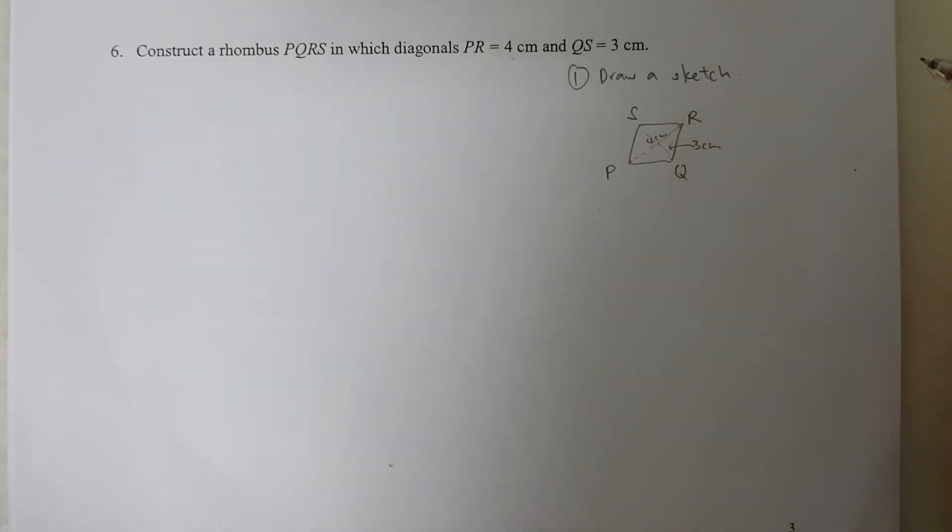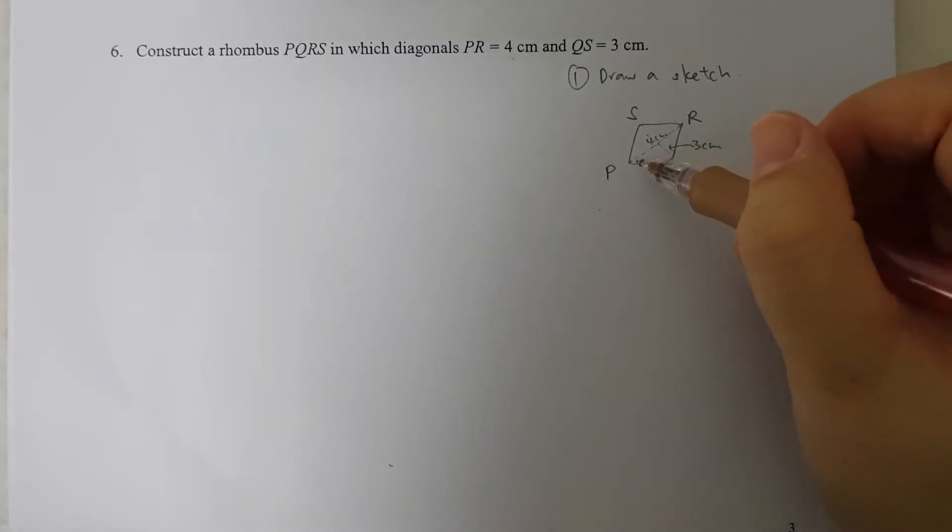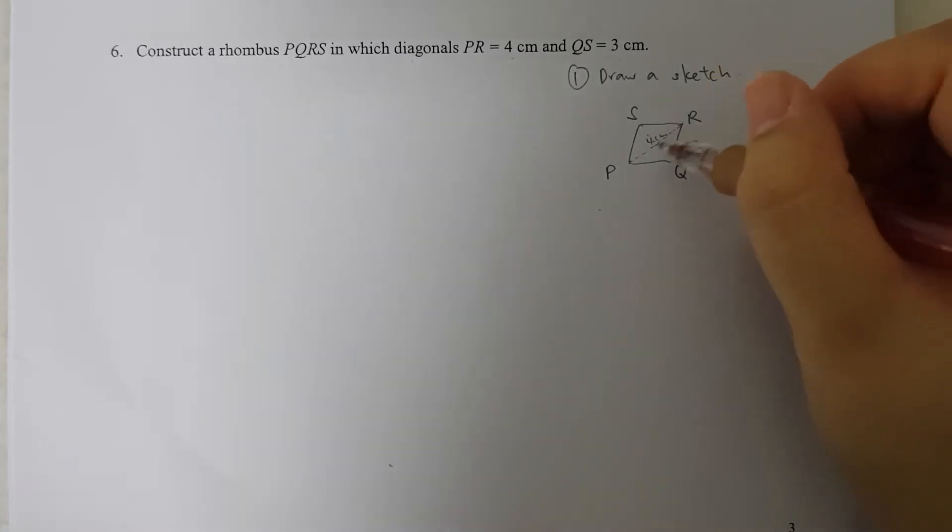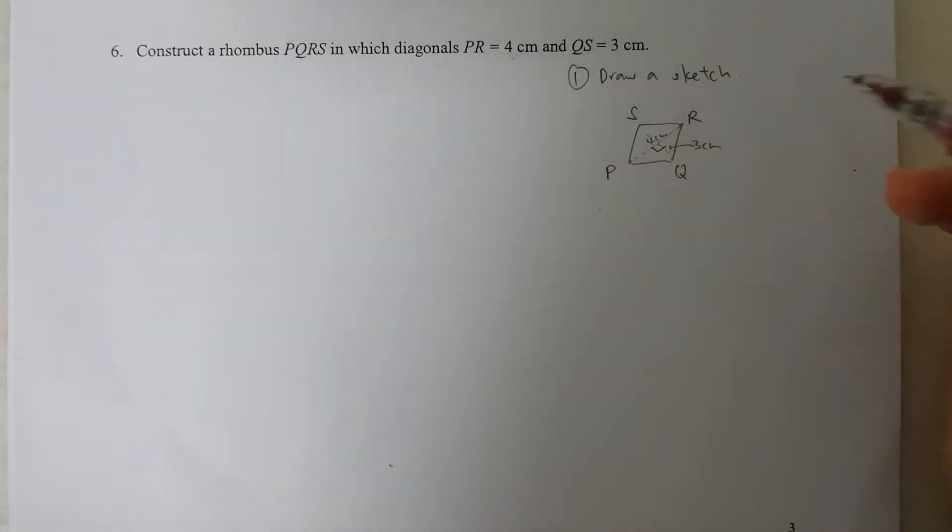So I'm going to start by drawing the length of the diagonal PR, and one very important property of rhombuses is that the diagonals make a right angle with each other.